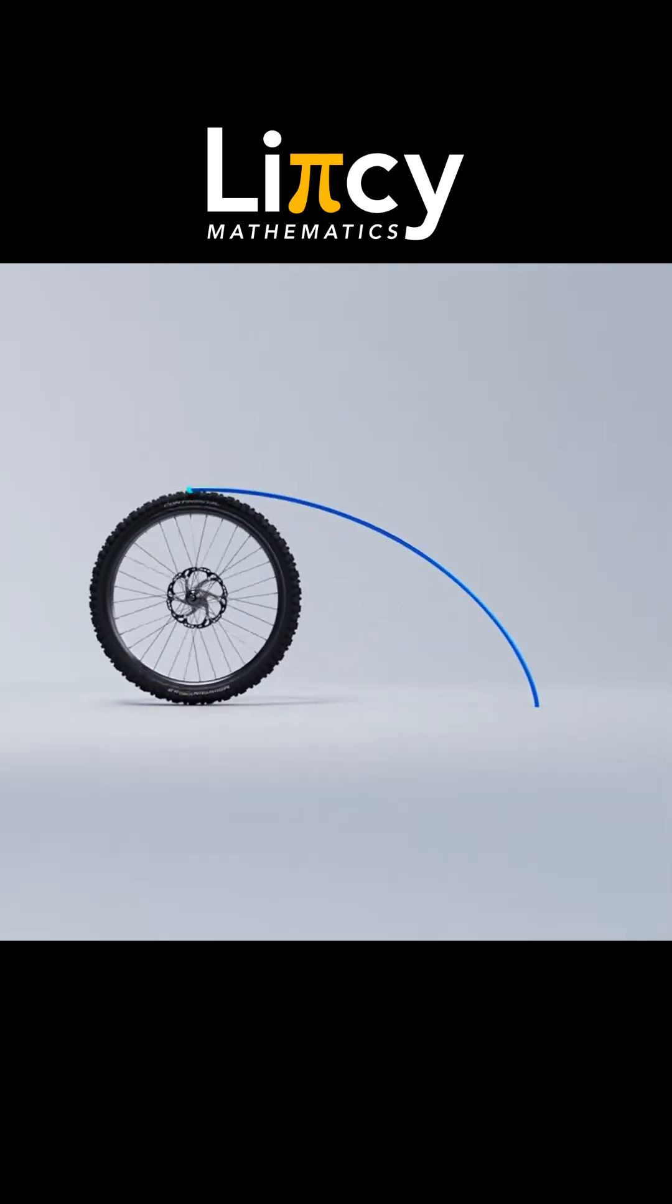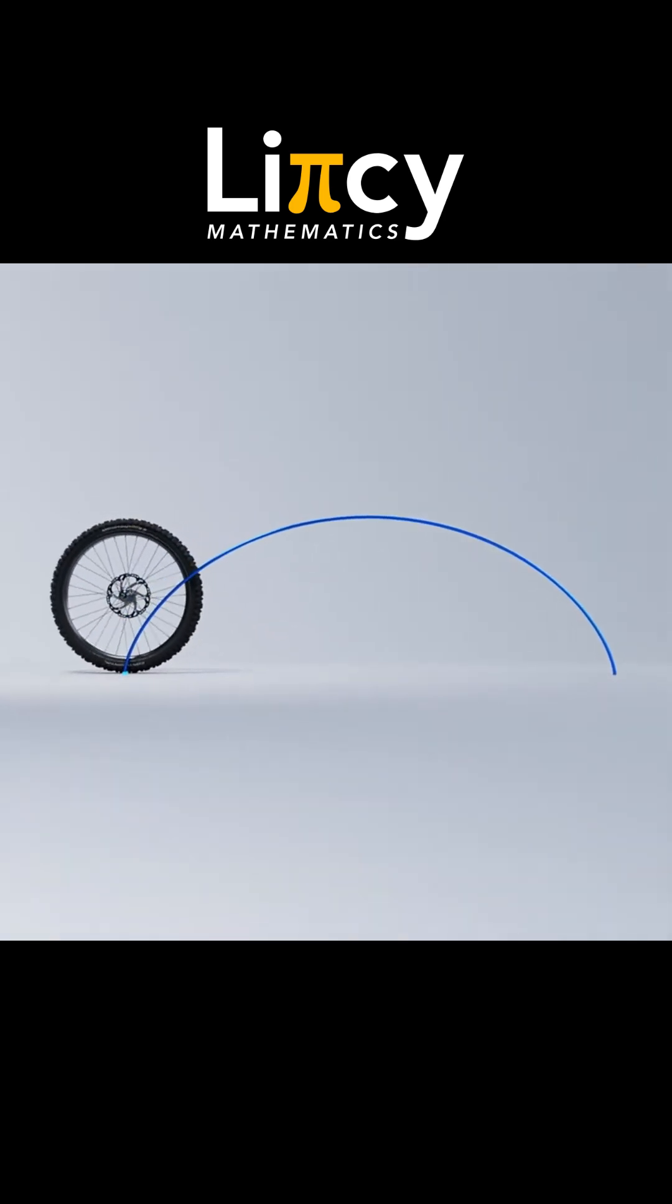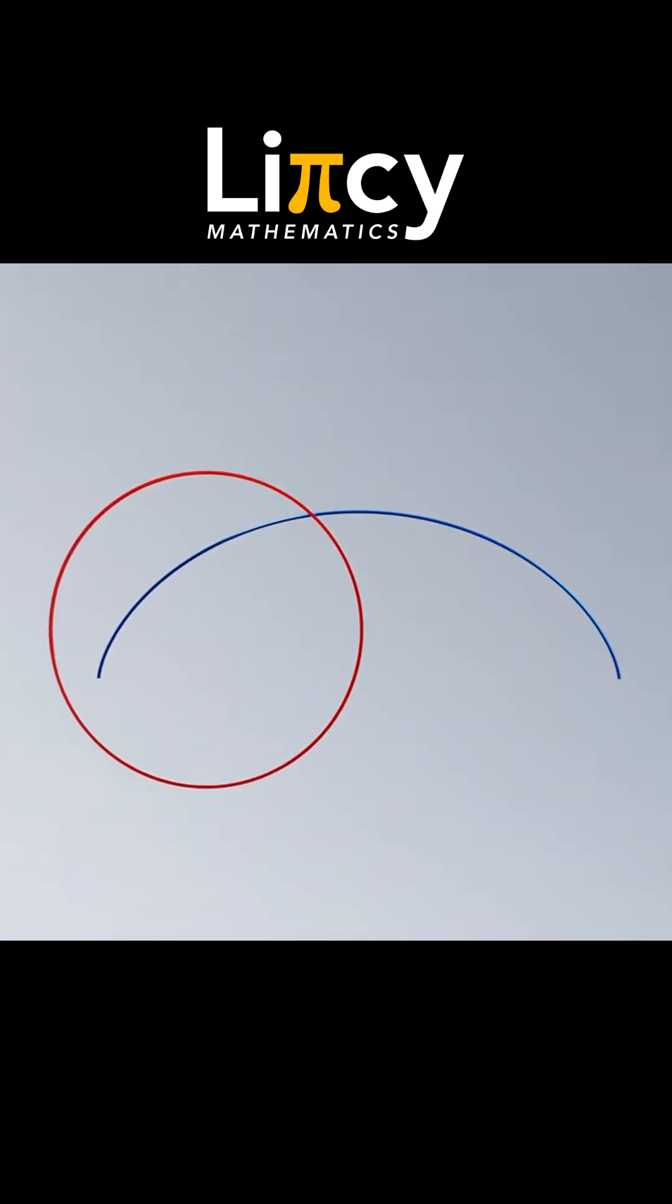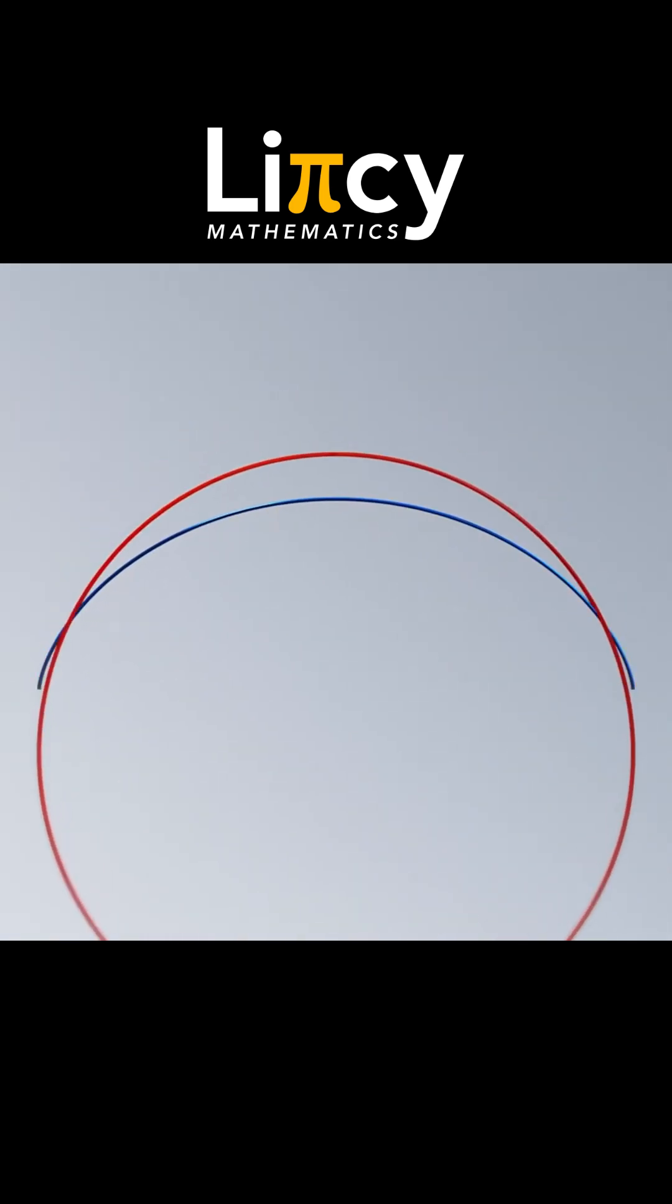If you take a point on the edge of a wheel and trace out its path as the wheel rolls, you'll draw out a curve called a cycloid. A cycloid might look like a slice taken out of a circle, but it is a unique kind of curve.